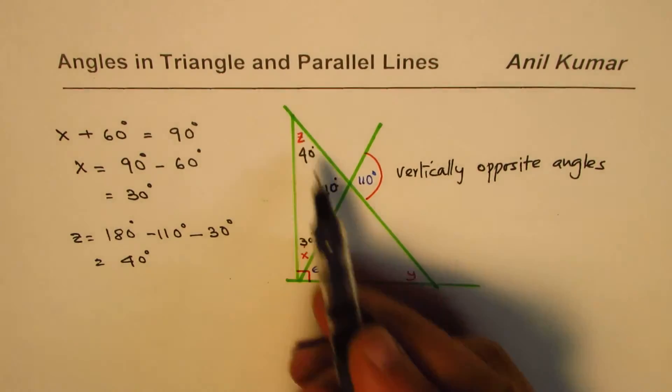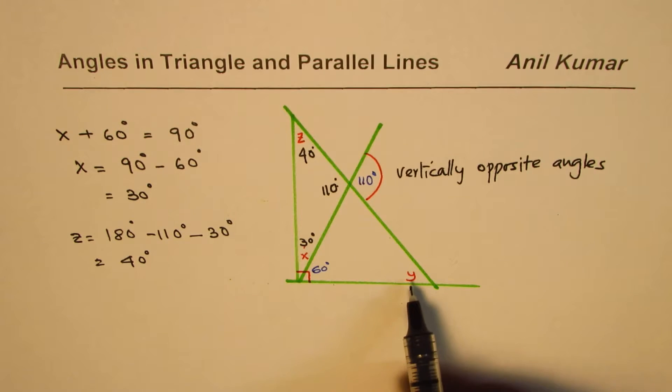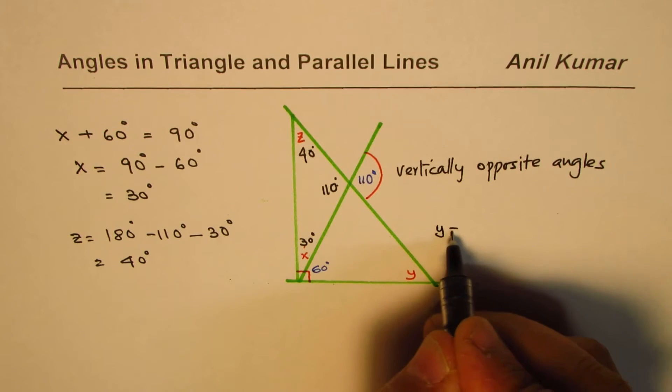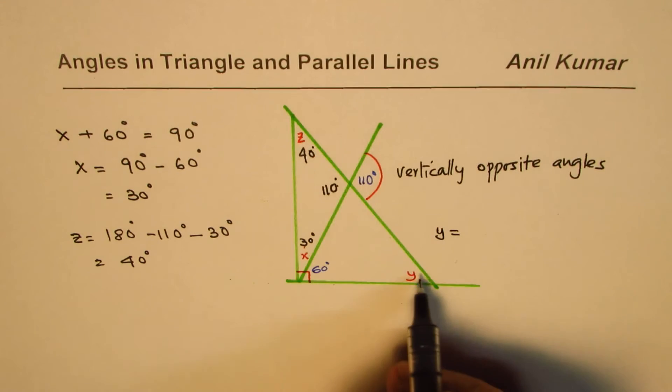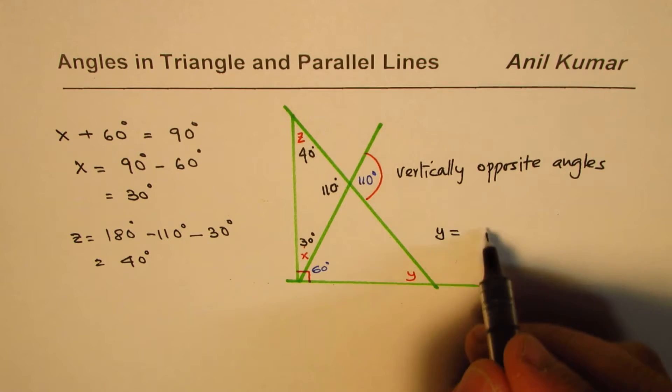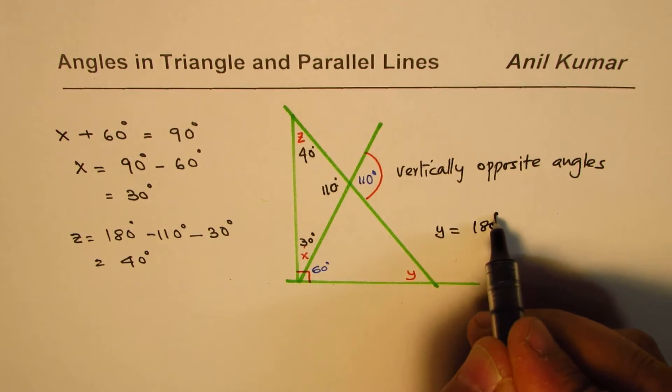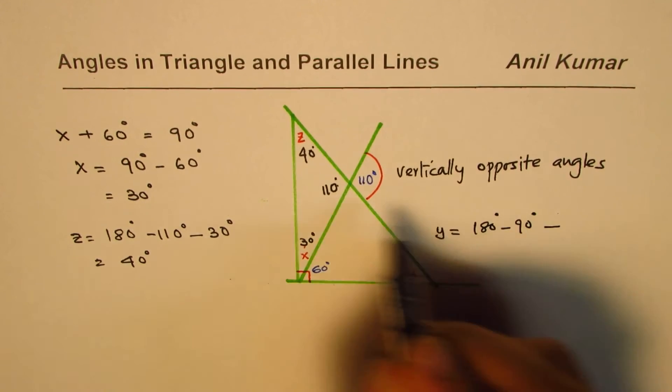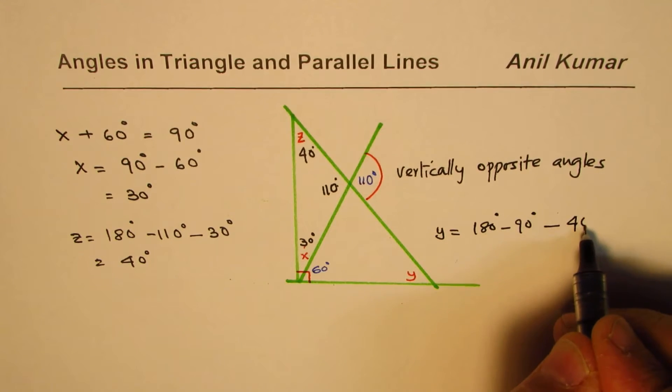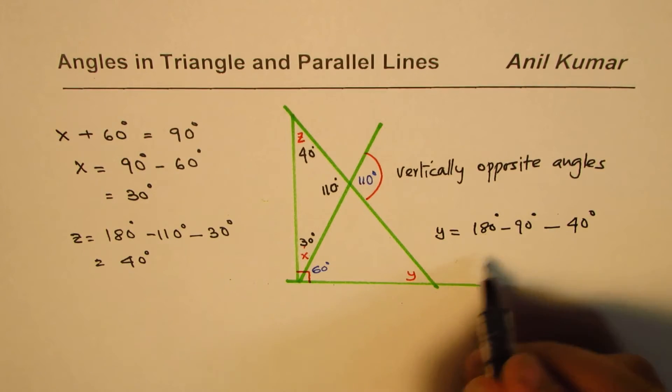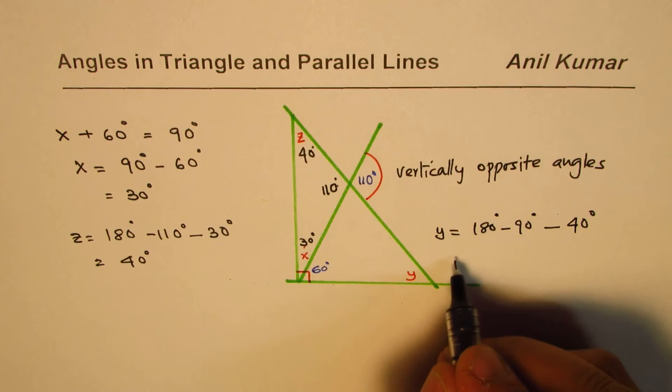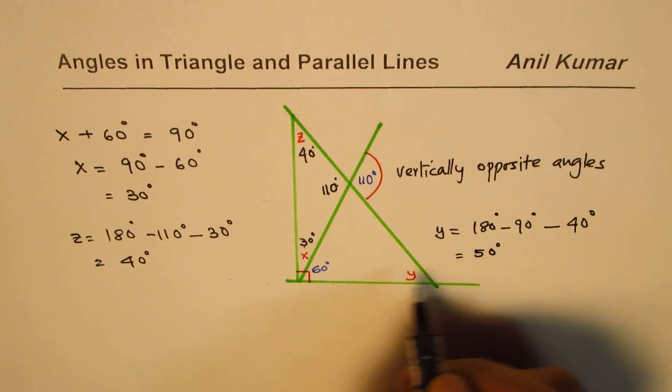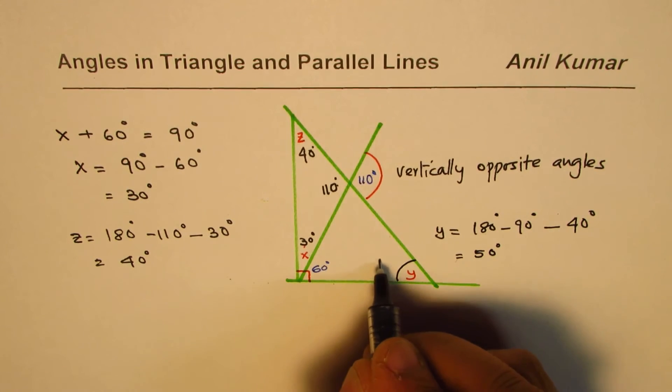Once you have z as 40 degrees, you can find what y is. Look at the big triangle. It is 180 degrees minus the 90 degrees and minus 40 degrees. 180 minus 90 is 90. 90 minus 40 is 50 degrees. So we get y equal to 50 degrees.